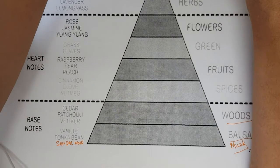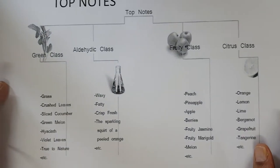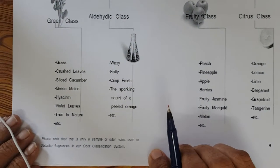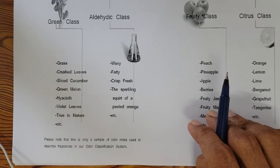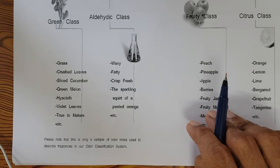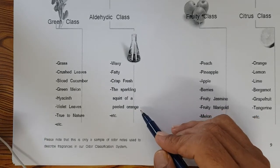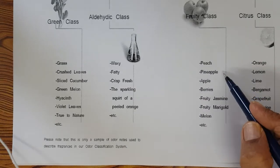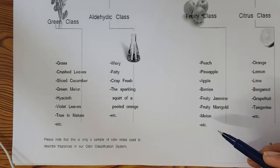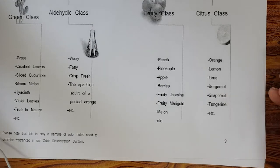Looking at examples of aromatic ingredients in each category: top notes include the green class — crushed leaves, sliced cucumber, green melon, violet leaves. Aldehyde notes are waxy and fatty with a sparkling character, like peeled orange. Fruity top notes include peach, pineapple, apple, berries, fruity jasmine, fruity marigold, and melon. Citrus top notes include orange, lemon, lime, bergamot, grapefruit, and tangerine.